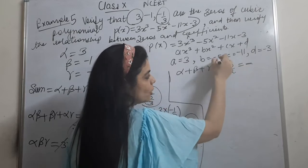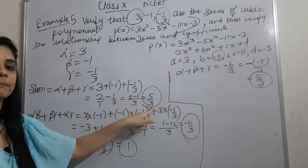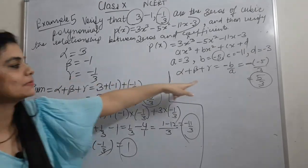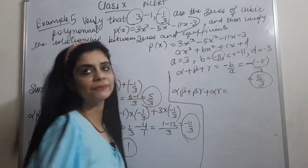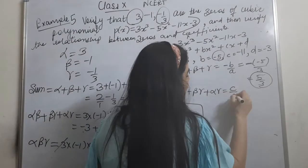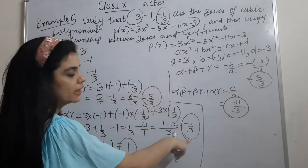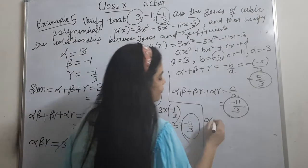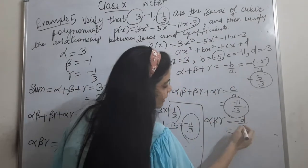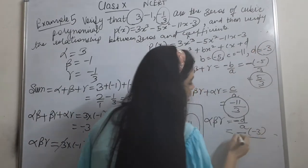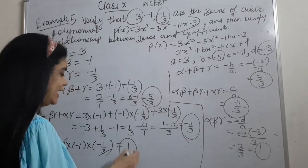Comparing gives a = 3, b = minus 5, c = minus 11, d = minus 3. So alpha plus beta plus gamma = minus b/a = minus(minus 5)/3 = 5/3, which matches. Alpha·beta + beta·gamma + alpha·gamma = c/a = minus 11/3, which also matches. Alpha·beta·gamma = minus d/a = minus(minus 3)/3 = 3/3 = 1, which also matches. Hence verified.